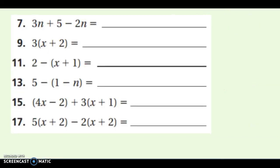Now I'll talk through some examples. For the first one, 3n plus 5 minus 2n, I don't have any distribution and no negatives to distribute. I just group like terms: 3n and negative 2n — keeping that negative glued to the term — and then the 5. Combining the n's: 3 minus 2 leaves me with 1n, which I'd just write as n plus 5.